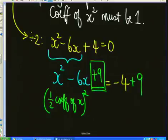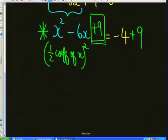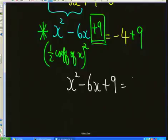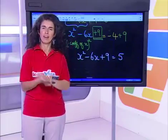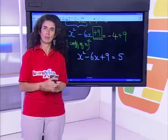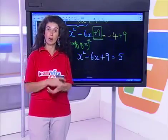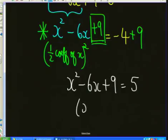So if I take half of negative 6, that's negative 3, and if I square it I get plus 9. This is an equation — there's an equal sign — so what I do to the left I do to the right. The coefficient of x squared is 1, and this is where I complete the square. I'm trying to get the trinomial to become a perfect square by adding half the coefficient of x squared. So now I have the trinomial x squared minus 6x plus 9. That's equal to 5.